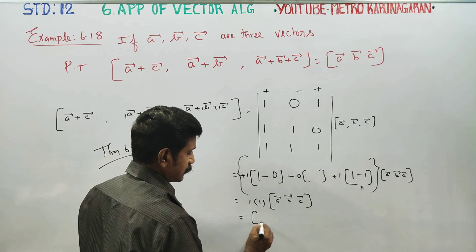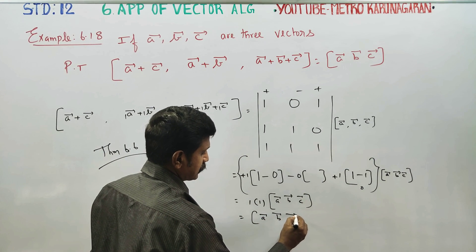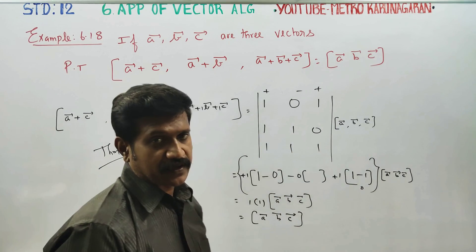1-1-0 is 0, ABC. This is how you can prove it. Thank you.